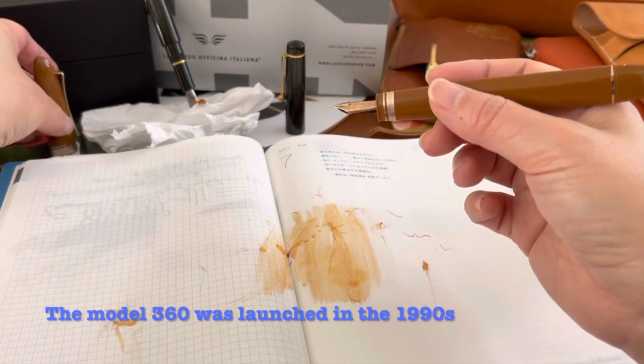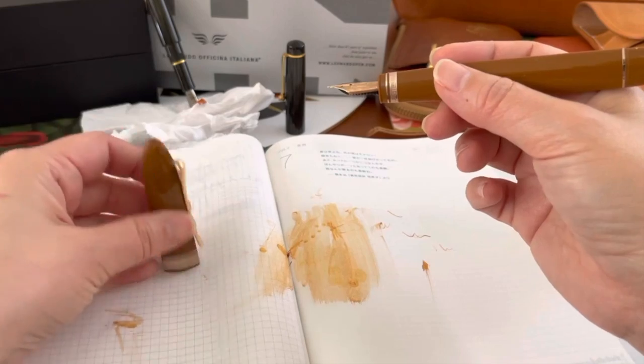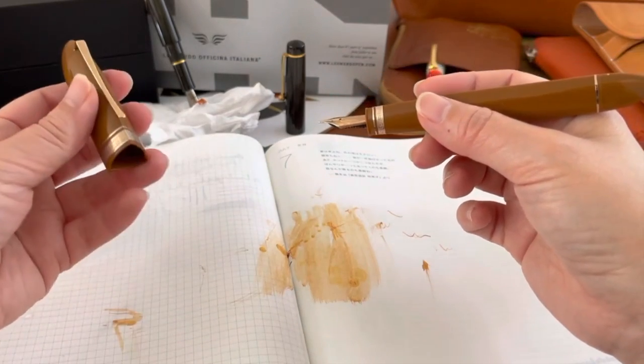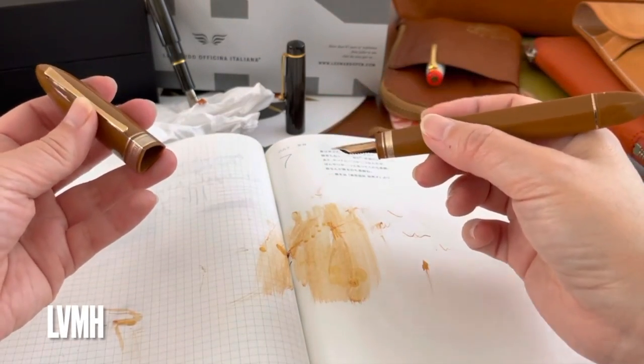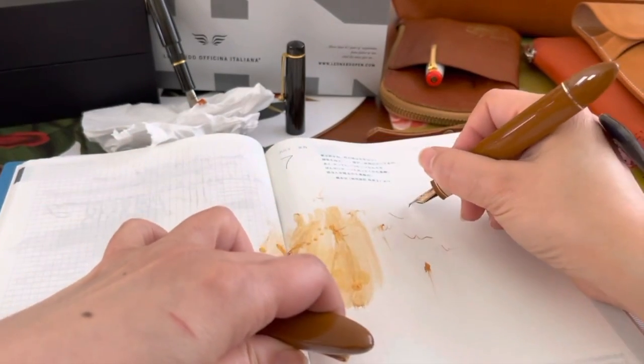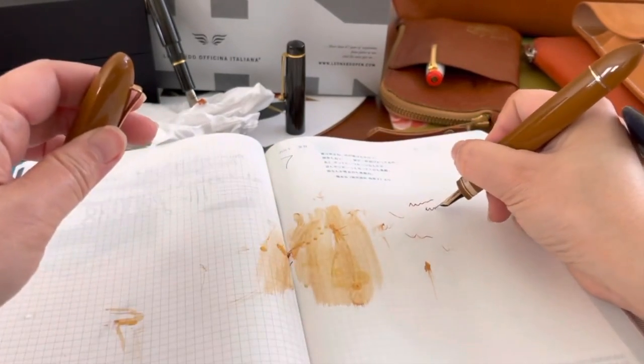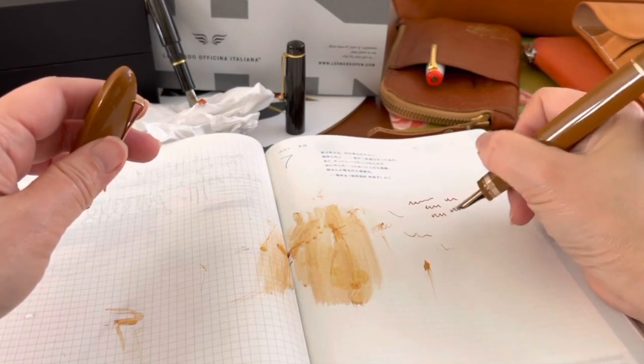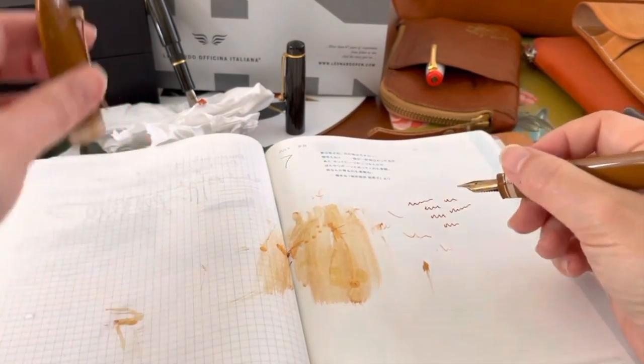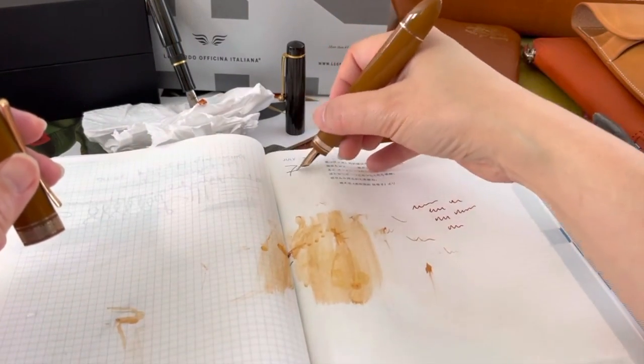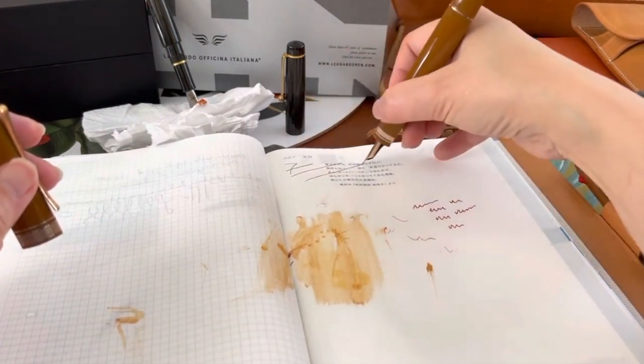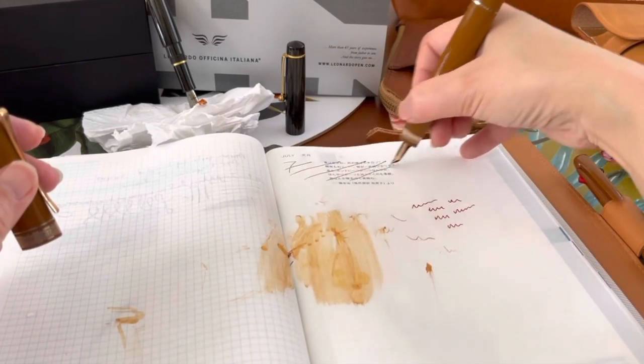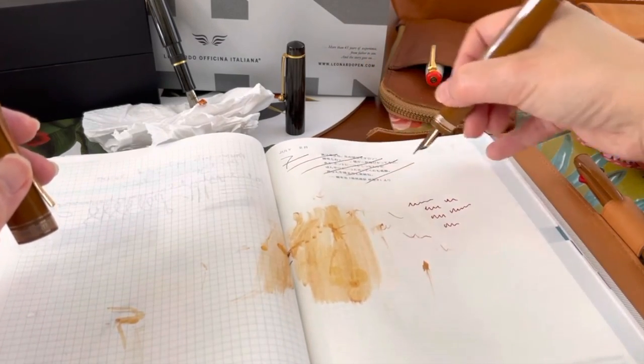Omas was sold off to the luxury conglomerate LVMH in 2000 and then subsequently sold off to a Chinese company which then sold it off again to another Chinese company and ended up being sold for parts. The brand was sold to one company, the material to another, and the technology and equipment to yet another company.